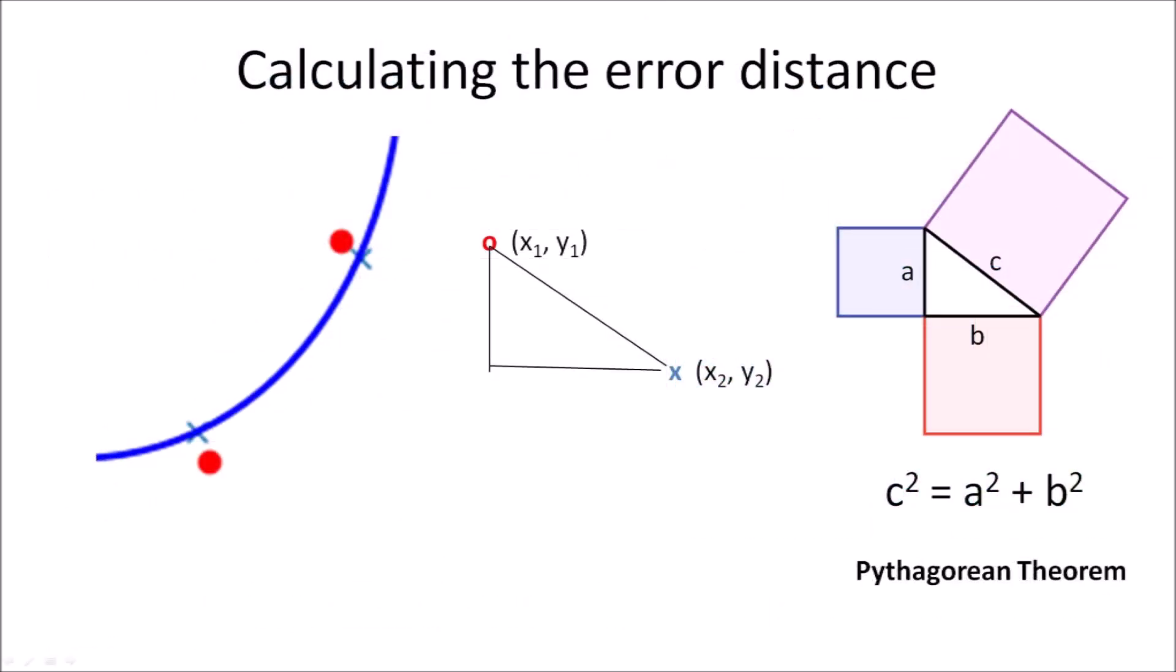My strategy for calculating the goodness of fit measure was to calculate the angle of each point relative to the center of the ellipse and then find the intersection point of a line at that angle on the ellipse. Using the Pythagorean theorem developed 2500 years ago allows us to calculate the error distance. The square of the hypotenuse of the right triangle is equal to the sum of the squares of the two other sides of the triangle.